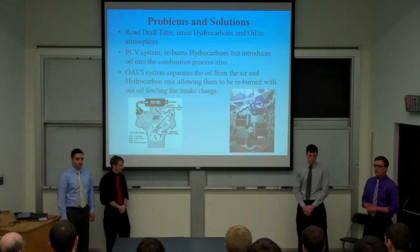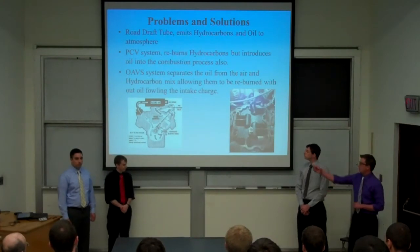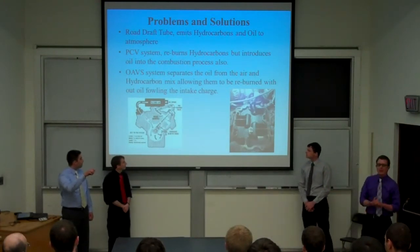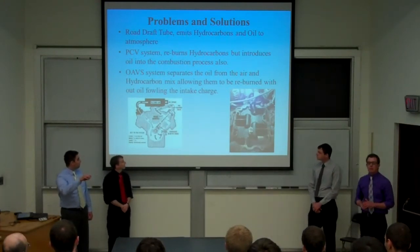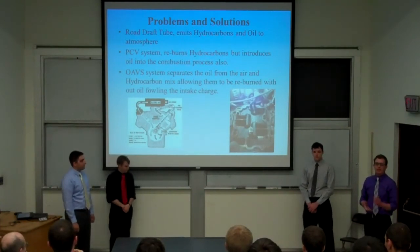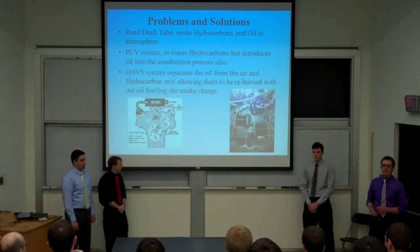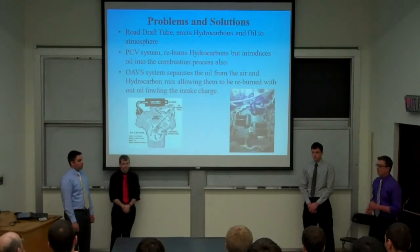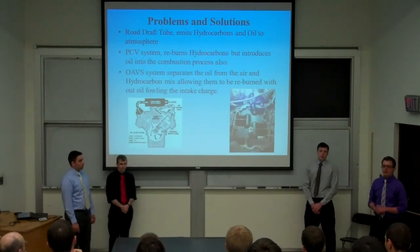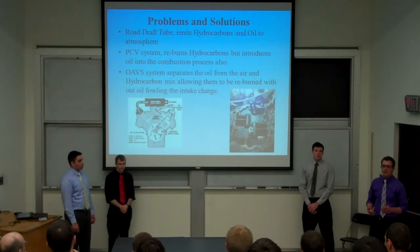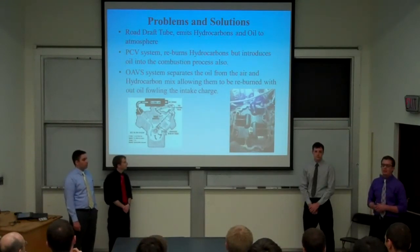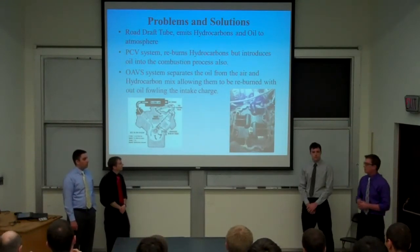In 1963, a GM engineer came up with a PCV system — this diagram on the left is actually the one from that — which re-routed the oil, air, and hydrocarbons back into the intake. Great for the hydrocarbons because they get re-burned; good for the environment. The problem is the oil that comes along with it contains cetane, and the amount of cetane added to the air-fuel mixture lowers the octane, which then lowers performance and economy.